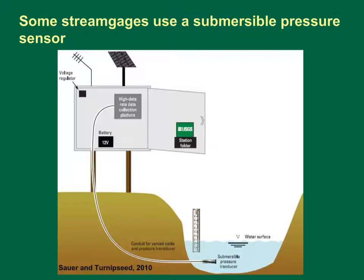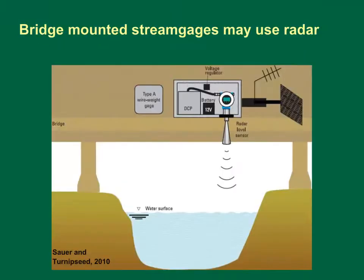This schematic diagram shows a stream gauge with a radar level sensor that is used to measure stream stage by measuring the distance from the radar unit to the water surface. This type of gauge is designed to be used for measuring stage from a bridge, usually when the distance to the water is large. As with the previous stream gauge, the electronics are powered by a solar battery system, and measurement results are transmitted via satellite or cell phone. This type of stream gauge will have a staff gauge mounted in the stream that is used to manually check the water level to help calibrate the radar unit.